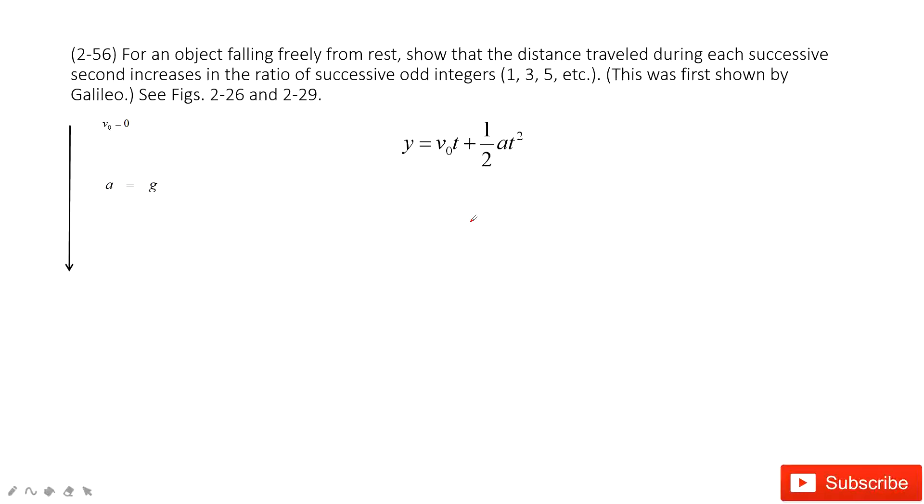This is still a free fall body. We can see how it works. It has an object falling freely from rest, so the initial velocity is zero.